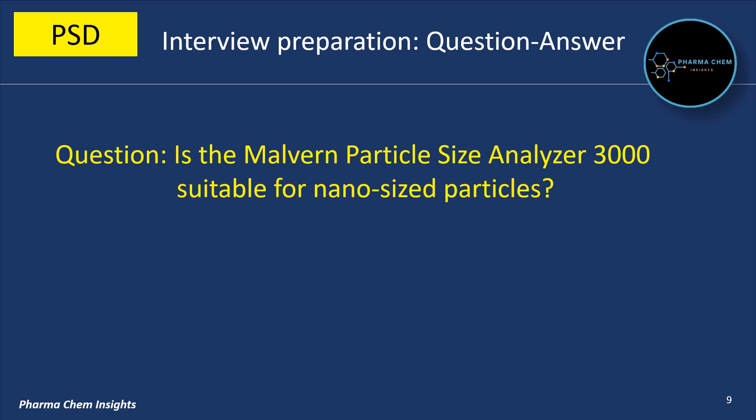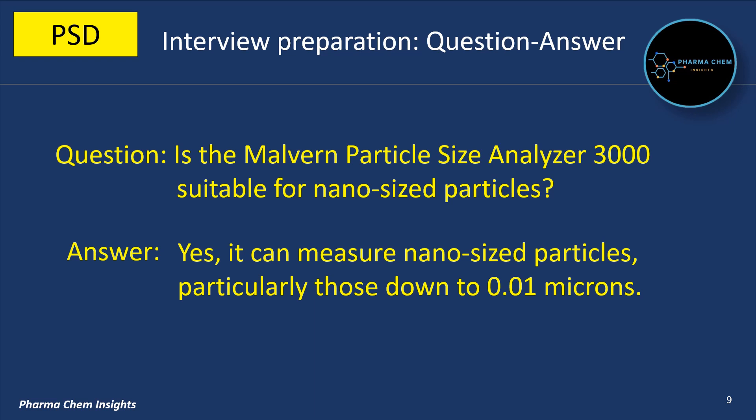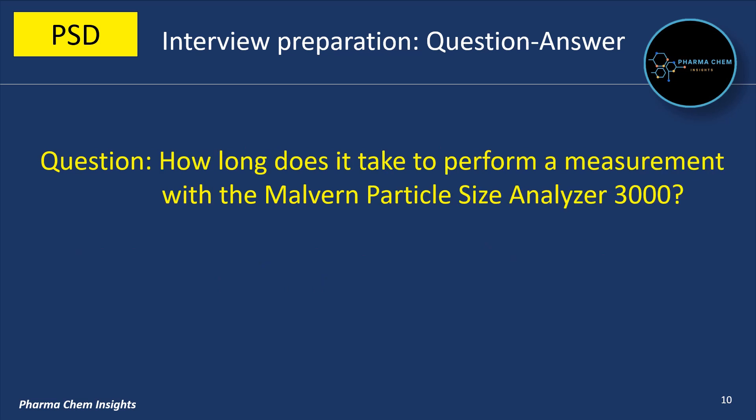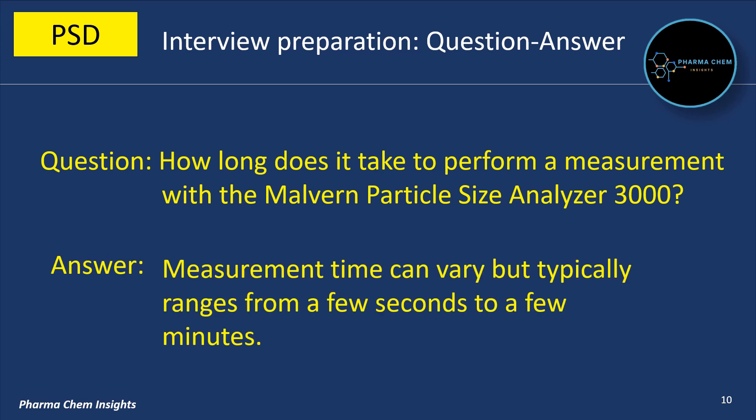Next question: is the Malvern Particle Size Analyzer 3000 suitable for nano-sized particles? Yes, it can measure nano-sized particles, particularly those down to 0.01 microns. How long does it take to perform a measurement? Measurement time can vary but typically ranges from a few seconds to a few minutes.